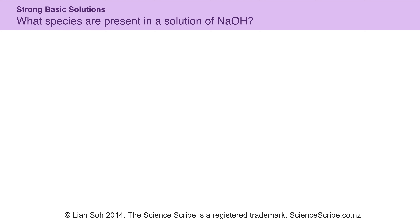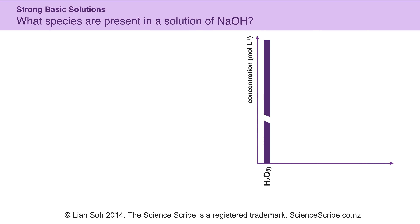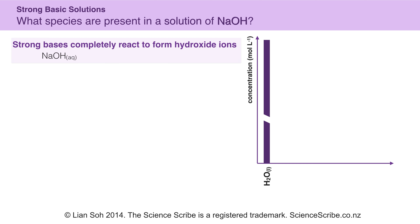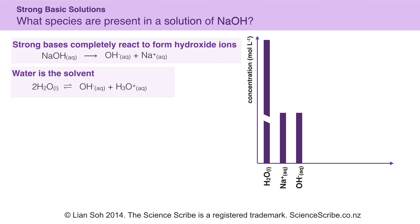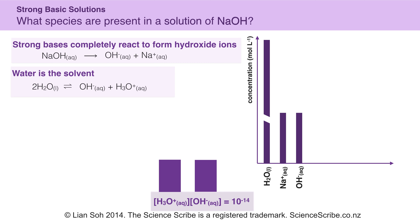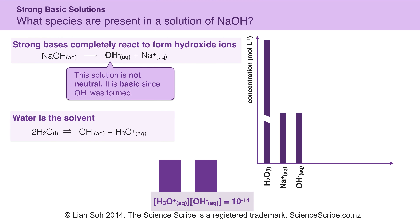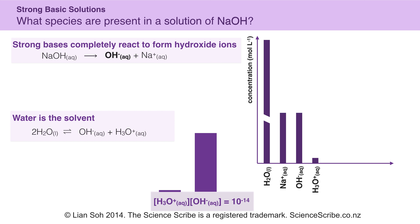What if instead I had a strong base, say sodium hydroxide? My equation is for a base — sodium hydroxide forms hydroxide and sodium plus ions in a 1 to 1 ratio. I'm not going to include NaOH itself because all of it dissolves to form hydroxide and Na+ ions; NaOH just by itself doesn't exist anymore. Water is still my solvent, and it's pretty evident that it's not neutral — it's basic because I'm forming hydroxide ions, so I should have more hydroxide ions than hydronium ions.